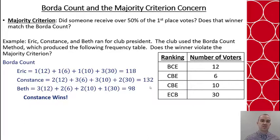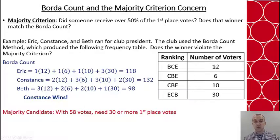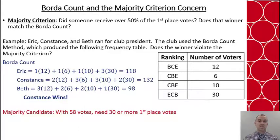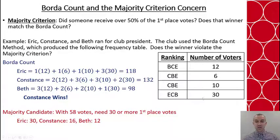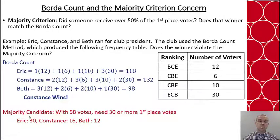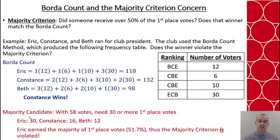But what about majority rule? There are 58 total votes. Half of that is 29, and we need one more than 29, so a candidate needs 30 votes. Does any candidate get 30 first-place votes? Eric got 30 first-place votes, Constance got 18, and Beth got 12. Eric got 30 votes, which means under majority rule, the win would go to Eric — but Constance won the Borda count. So we can say the majority criterion is violated in this case.